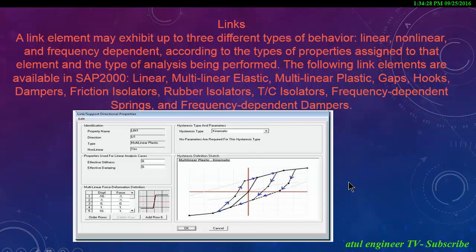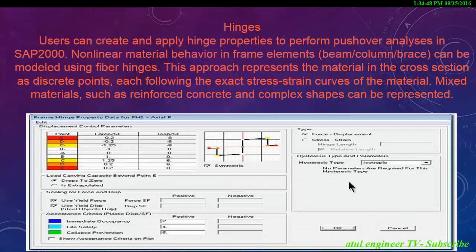A link element may exhibit up to three different types of behavior: linear, nonlinear and frequency dependent, according to the types of properties assigned and the type of analysis being performed. The following link elements are available in SAP 2000: linear, multi-linear elastic, multi-linear plastic, gaps, hooks, dampers, friction isolators and rubber isolators.